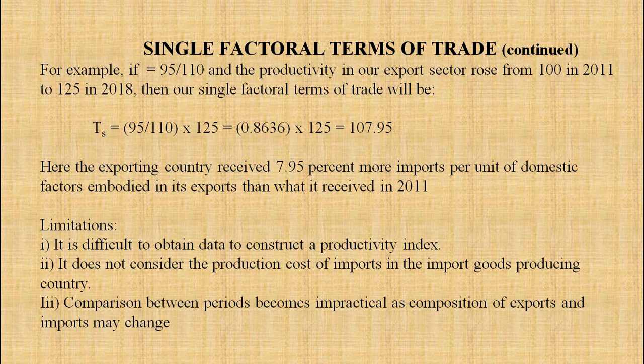For example, if Px/Pm is 95/110 and the productivity in our export sector rose from 100 in 2011 to 125 in 2018, then our single factorial terms of trade will be: Ts = (95/110) × 125 = 0.8636 × 125 = 107.95. Here, the exporting country received 7.95% more imports per unit of domestic factors embodied in its exports than what it received in 2011.